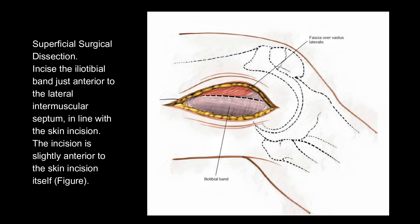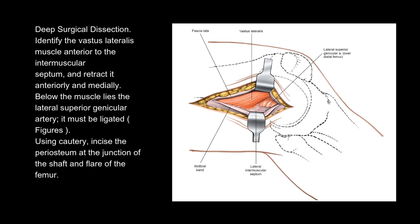Superficial surgical dissection: incise the iliotibial band just anterior to the lateral intermuscular septum, in line with the skin incision. The incision is slightly anterior to the skin incision itself.